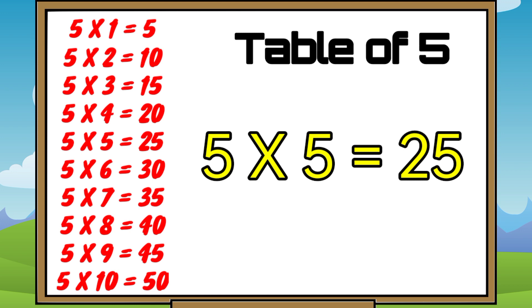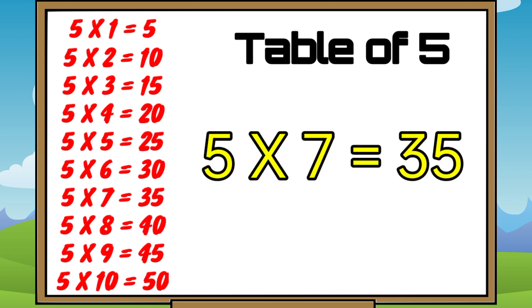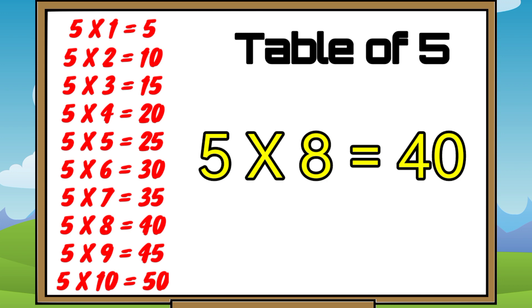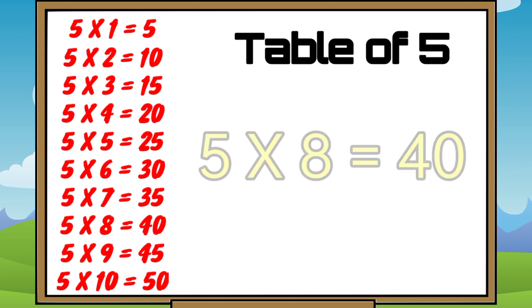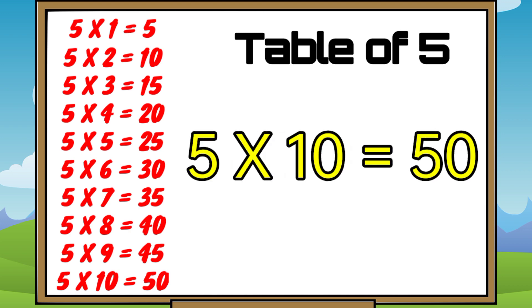5 sixes are 30. 5 sevens are 35. 5 eights are 40. 5 nines are 45. 5 tens are 50.